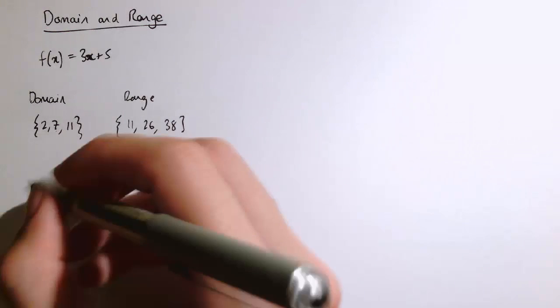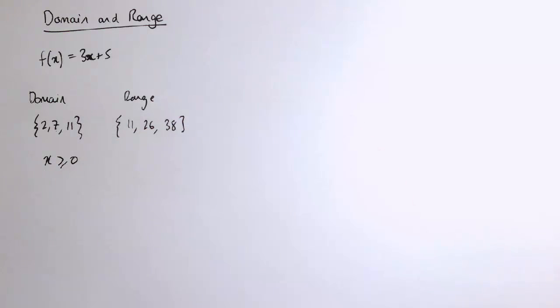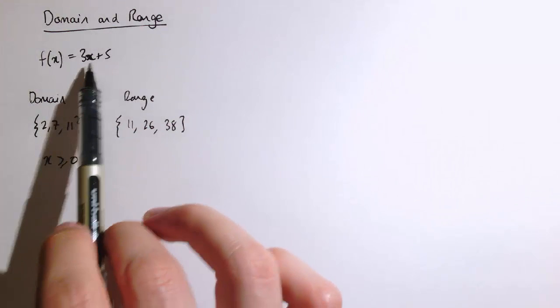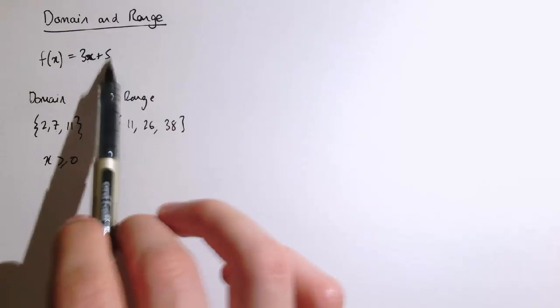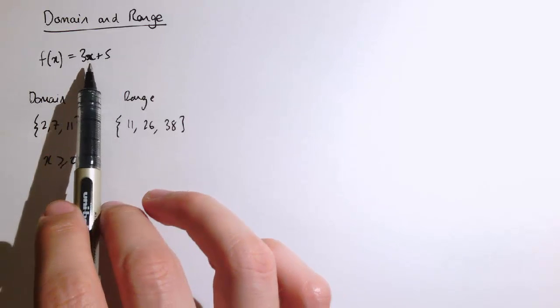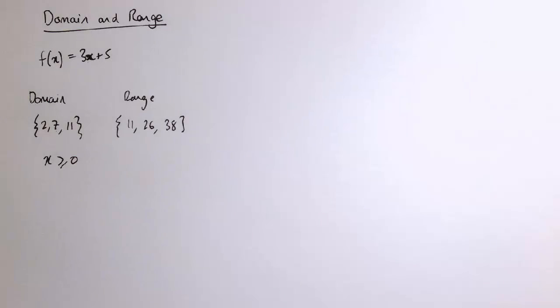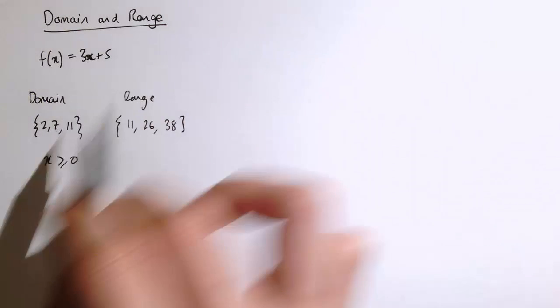If the domain was all values of x that's bigger than 0, for 0 we've got 3 times 0 plus 5 which is 5, and we could get any value bigger than that by just increasing x.